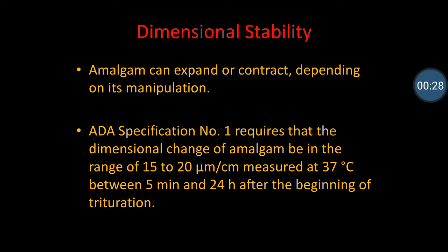Regarding dimensional stability: on manipulation, amalgam might expand or contract. On contraction, the amalgam will cause micro-leakage, sensitivity, and formation of secondary caries. With expansion, it causes protrusion of the filling, pain on biting, and fracture of the restoration. The minimum range recommended is 15 to 20 micrometers per centimeter at 37°C.